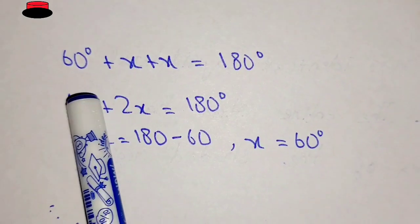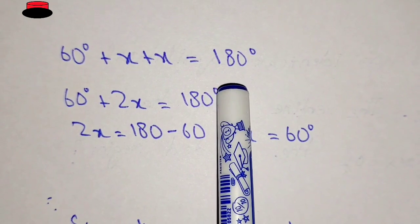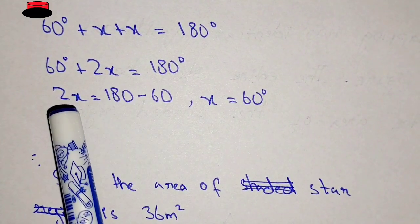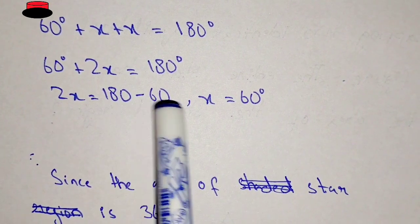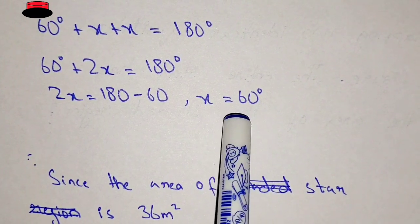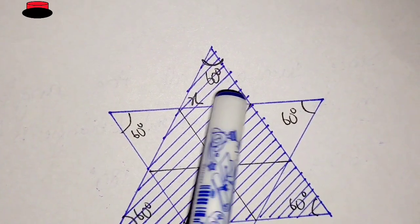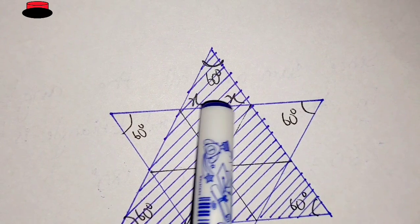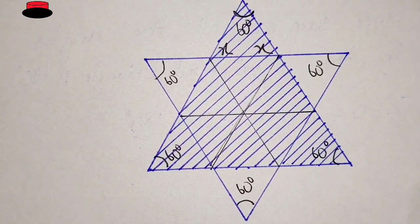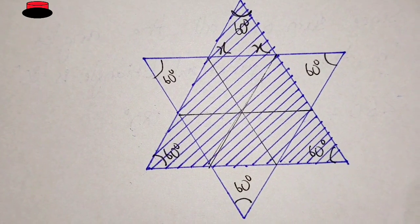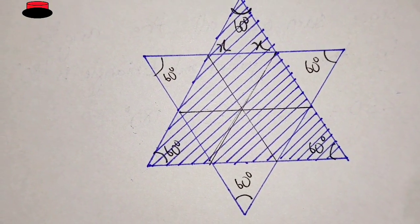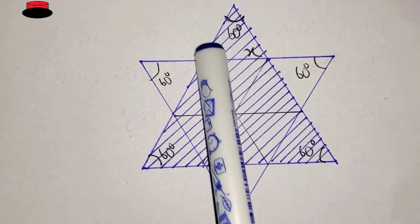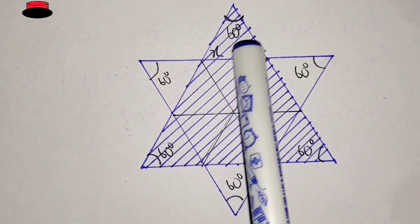We can say: 60 degrees plus x plus x equals 180 degrees, so 60 plus 2x equals 180, meaning 2x equals 120, so x equals 60 degrees. This means all angles in the small triangle are also 60 degrees. Since the area of the star is 36 square meters, we need to find the shaded region, knowing all small triangles have 60-degree angles.